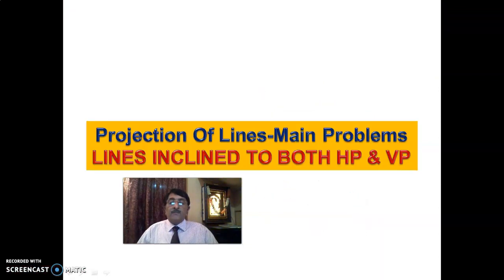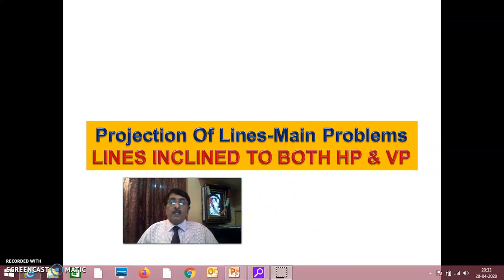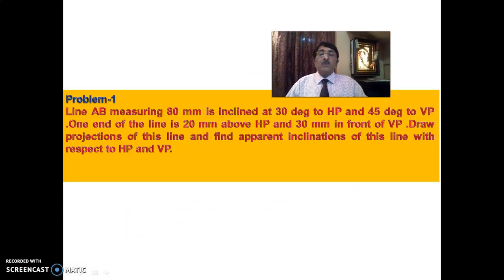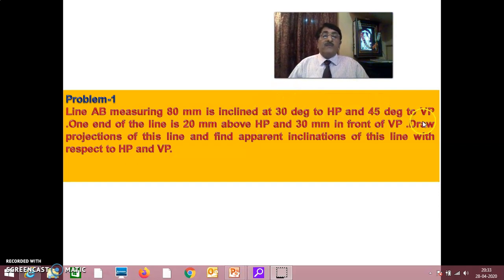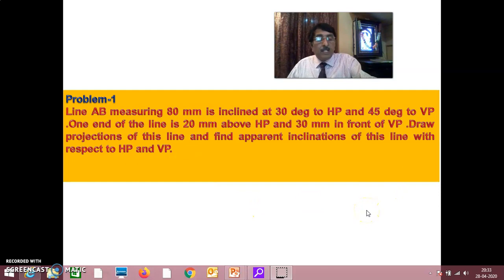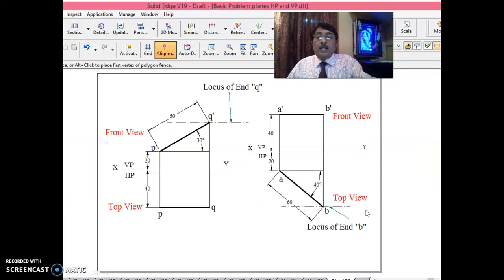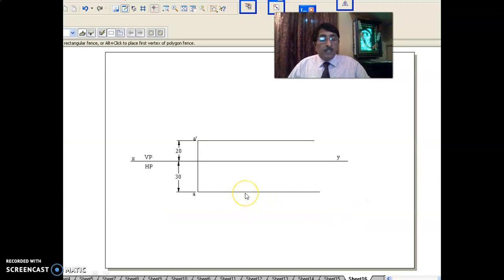Now, projection of lines — main problems inclined to both HP and VP. A line is measuring 80 mm. It is inclined at 30 degrees to HP and 45 degrees to VP. One end is 20 mm above HP, 30 mm in front of VP. Draw the projections of this line. In the previous examples, the line was parallel to VP or parallel to HP. But in these problems, the line has inclination to both planes — not only inclined to HP but also inclined at some degrees to VP. In this complex position, how it appears in the front view and top view has to be determined.